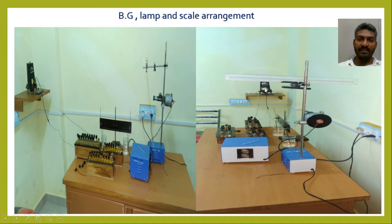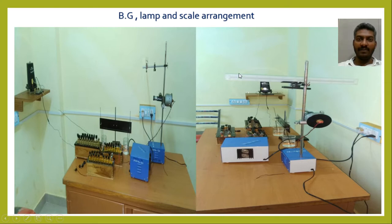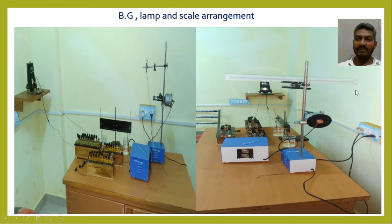When the coil turns inside the BG due to the flow of charges, the spot moves on the scale either towards right or towards left. The spot will oscillate due to the oscillation of the coil inside the ballistic galvanometer. The deflection of the spot towards left is θ1, towards right is θ2, again towards left is θ3, towards right is θ4, and so on. That is, deflections towards left are θ1, θ3, θ5, and so on.